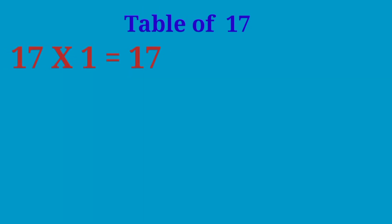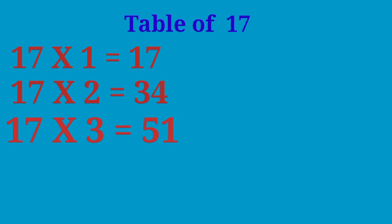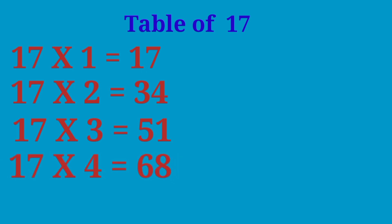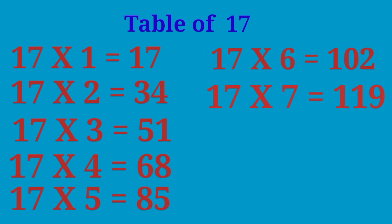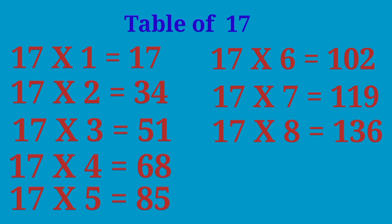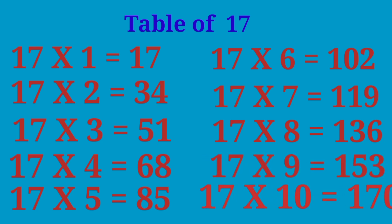Table of 17: 17×1 are 17, 17×2 are 34, 17×3 are 51, 17×4 are 68, 17×5 are 85, 17×6 are 102, 17×7 are 119, 17×8 are 136, 17×9 are 153, 17×10 are 170.